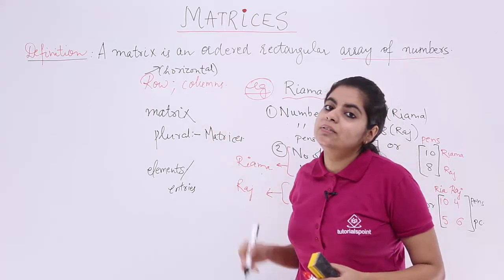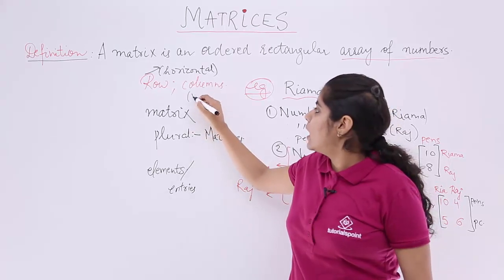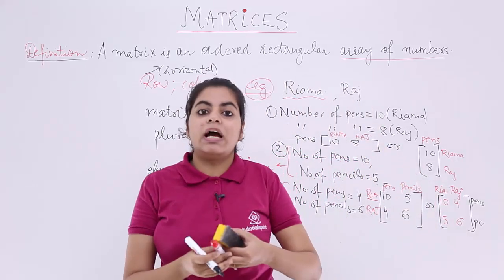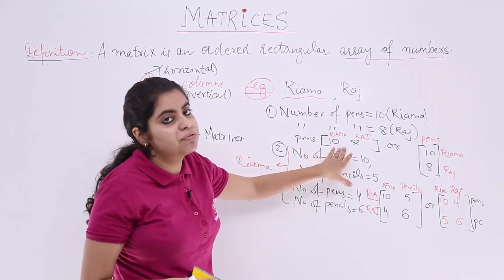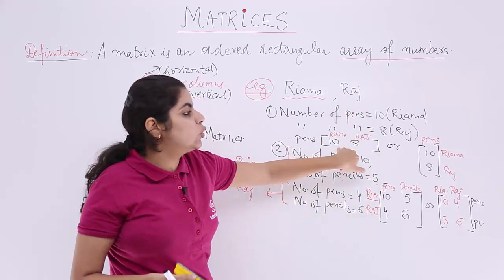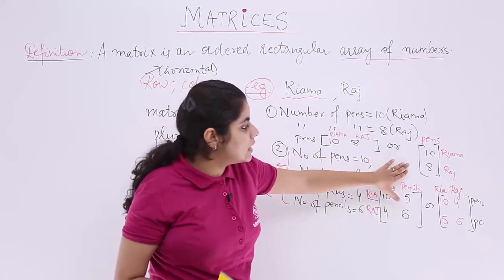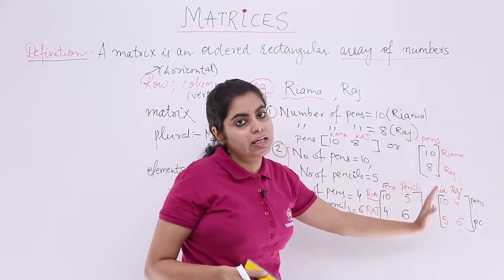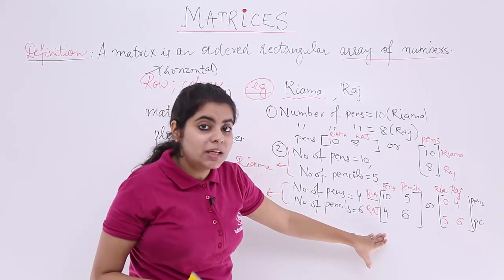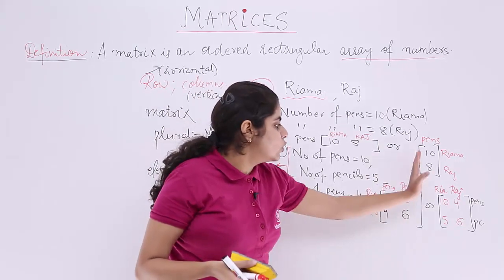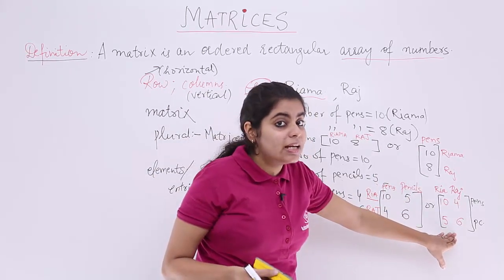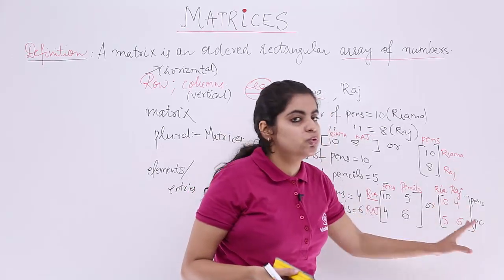The vertical things are called columns. So in the examples studied, for the first case vertically there are two columns. For the second case there is only one vertical line — one column. For the next case, two vertical things — two columns. And for the last example, again two columns.